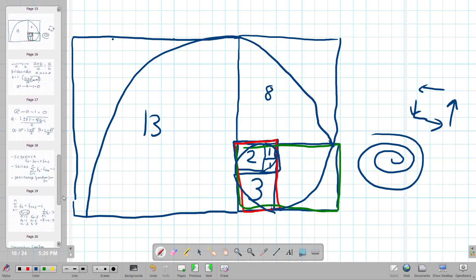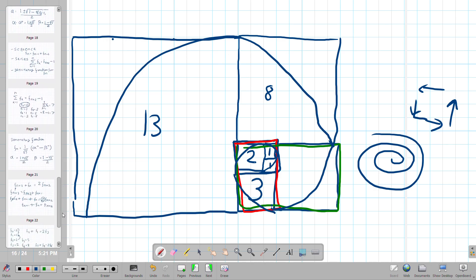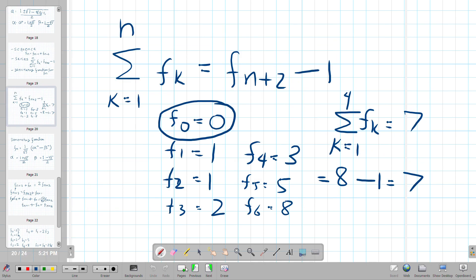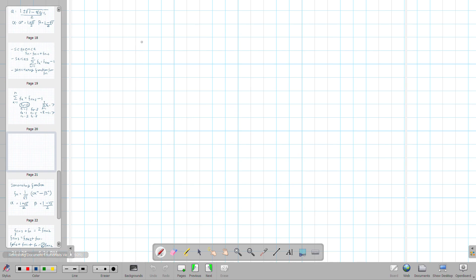Now another thing that you can do is say there are many sums, there are many sums of the sequence, infinite sums. So I'll give you one that I reference. It's right in here and I'm going to write it in another sheet. So it's K from one to N, F sub K is equal to F of N plus two minus one.